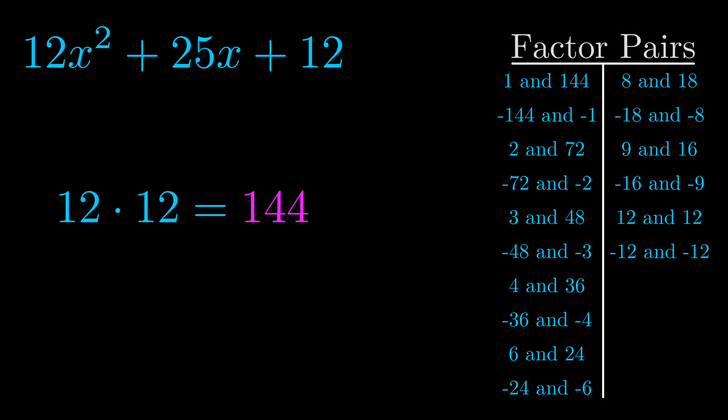The b value is the coefficient on the x term. That's the middle term, the one that we haven't done anything with yet. And really this is the only factor pair that we need.